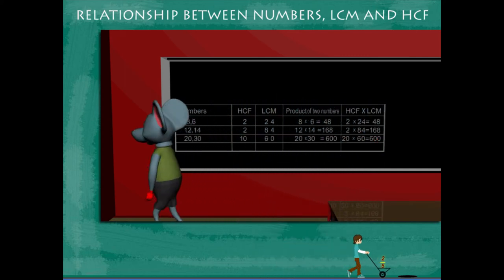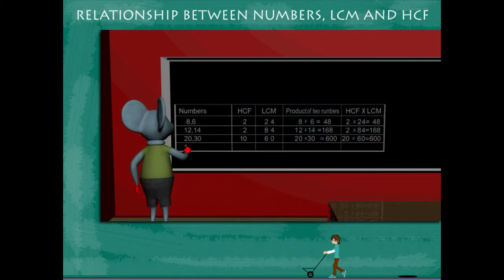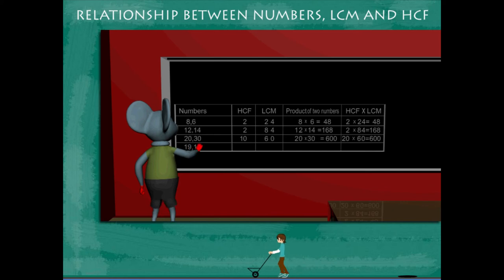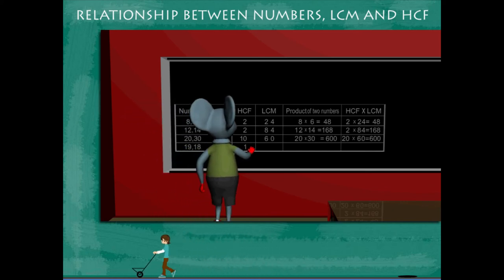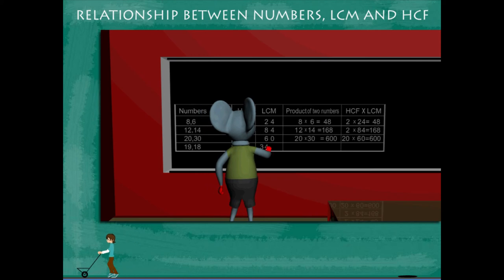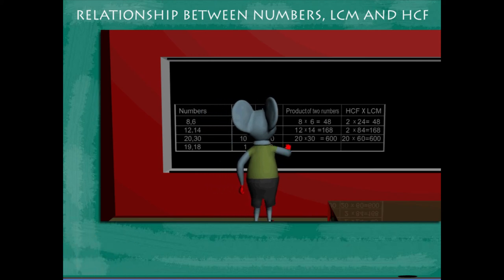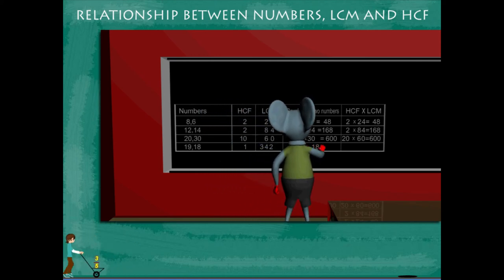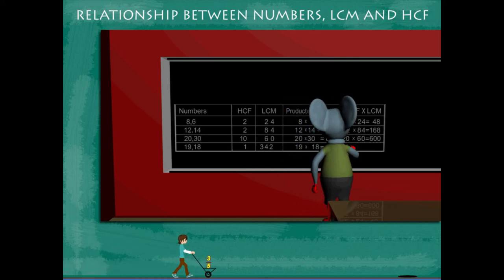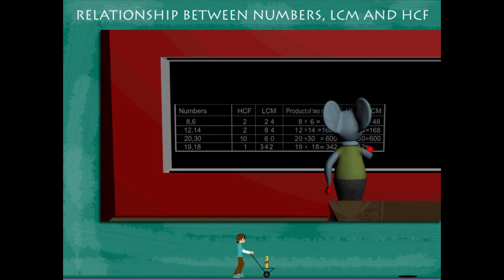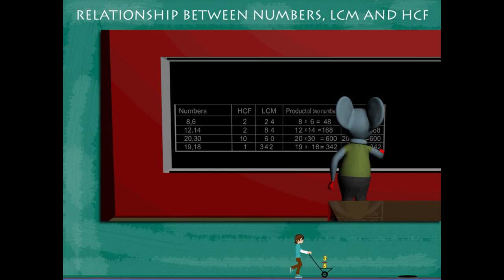The last set of numbers is 19 and 18. The HCF is 1, the LCM is 342. The product is 342 and the product of HCF and LCM is also 342.